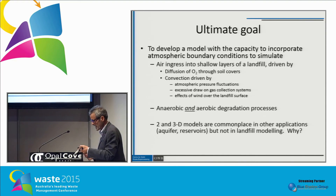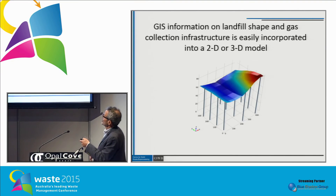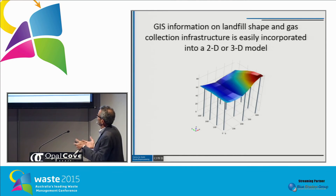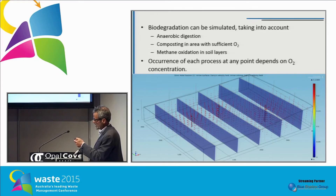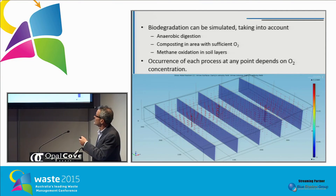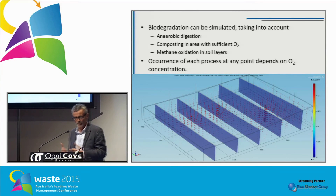The sophistication of landfill models is not at the same level as what we apply in other multidimensional systems. GIS information, as seen in earlier talks, can easily be incorporated, and there are models that can accept this sort of information. We can simulate biodegradation taking into account anaerobic digestion, composting in areas with sufficient oxygen, and methane oxidation in soil layers — the occurrence of each process being a function of the oxygen at that point.